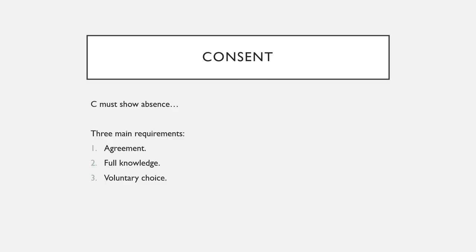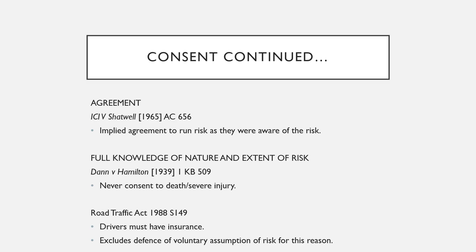Moving on to consent — once the defendant raises this defence, the burden of proof shifts to the claimant to show the absence of consent. There are three main requirements: agreement, full knowledge, and voluntary choice. Looking at agreement, in ICI v Shatwell, workers were testing detonators and decided to do it in an open space, knowing they weren't meant to. There was an implied agreement between the two to run the risk, as they knew what the risk was. The defendants were therefore no longer liable — it was their decision and they chose to continue.